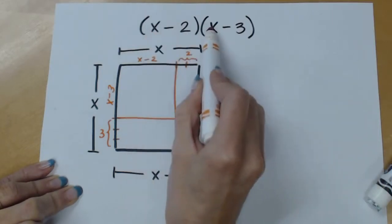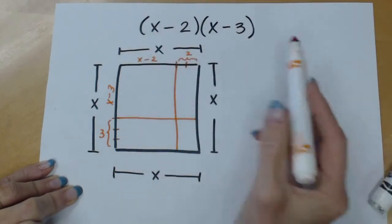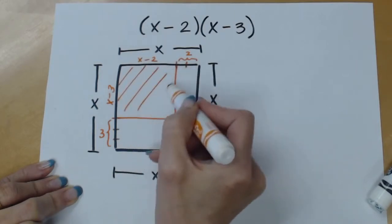So now if I want to find the area of x minus 2 times x minus 3, it is this orange area.